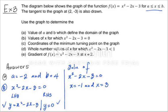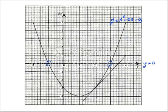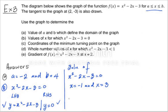Part C asks for the coordinates of the minimum turning point. The minimum turning point is the lowest point on the graph, where x = 1 and y = -4. So the minimum turning point is (1, -4).